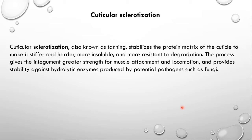Another term you will come across often in entomology is sclerotization. Cuticular sclerotization, also known as tanning, is a process that stabilizes the protein matrix of the cuticle to make it stiffer, harder, more insoluble, and more resistant to degradation. This process gives the integument greater strength for muscle attachment and locomotion and provides stability against hydrolytic enzymes produced by potential pathogens such as fungi - protecting from both mechanical stress and the outer environment.